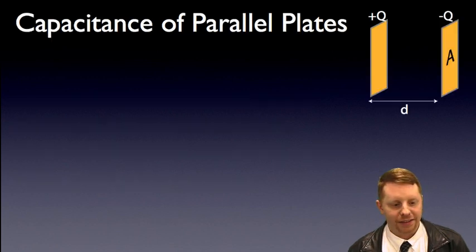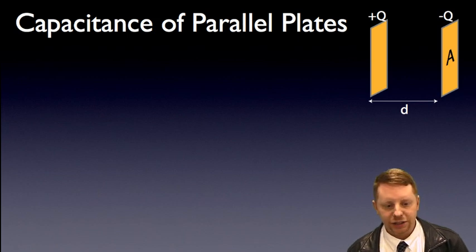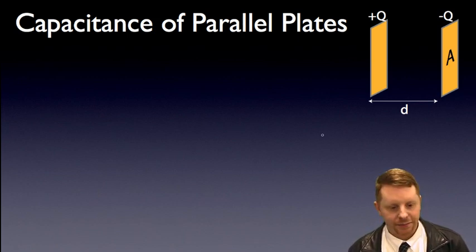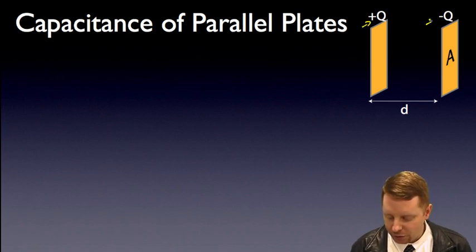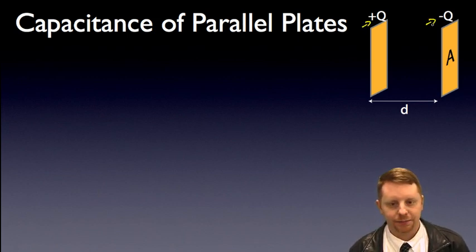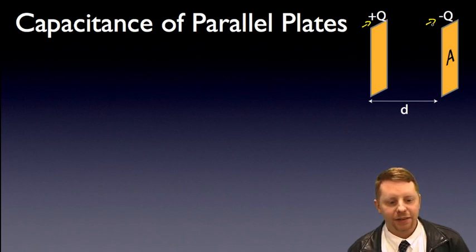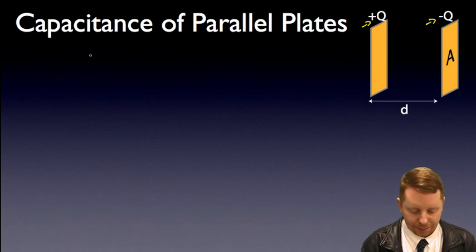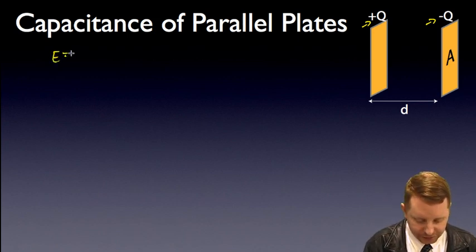Let's find the capacitance of parallel plates — two identical parallel plates, each of area A separated by a distance d. Our first step is to assume a charge of plus Q and minus Q on each plate. Our second step: find the electric field. The electric field due to the plane of charge is sigma over epsilon naught, so E equals sigma over epsilon naught.